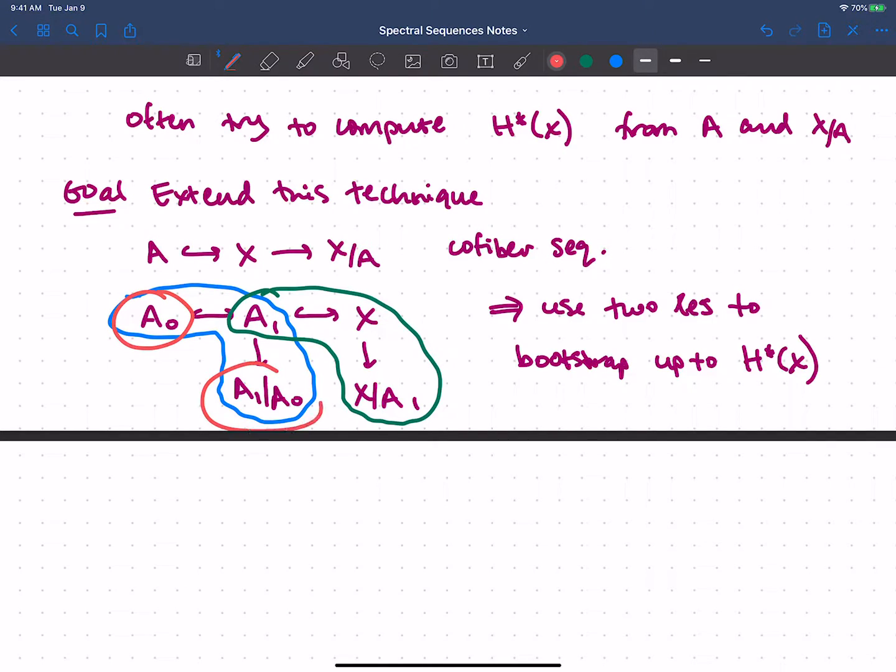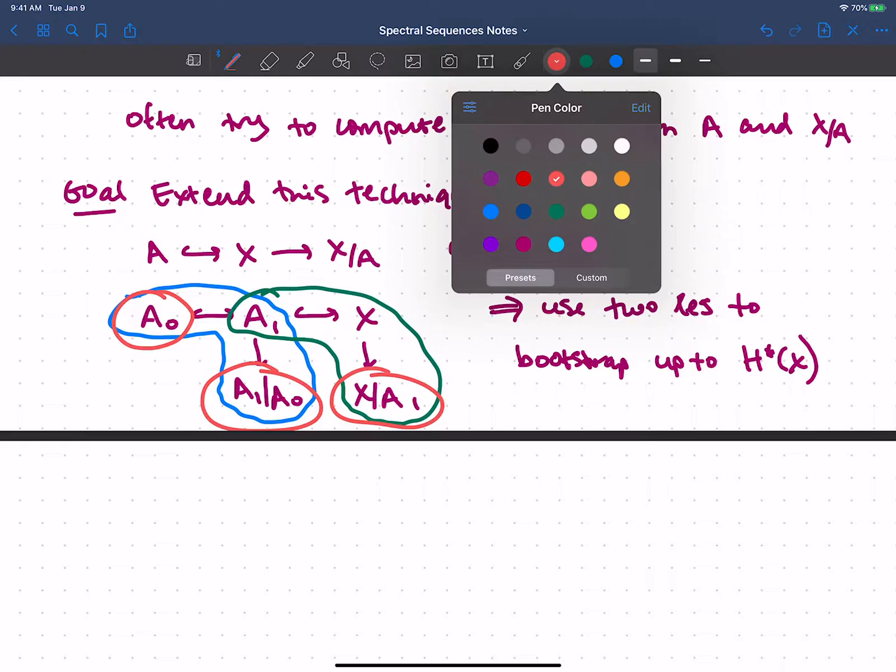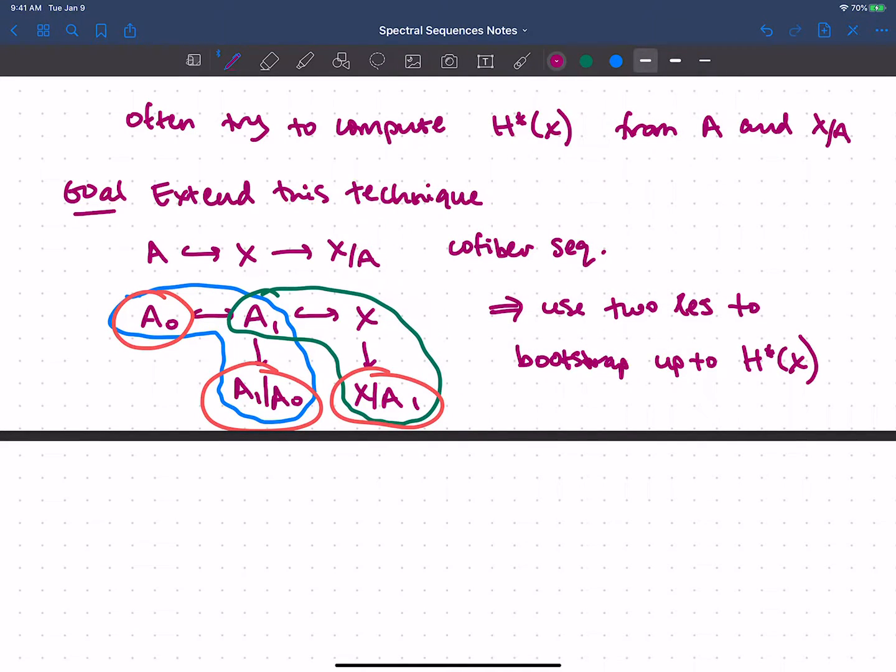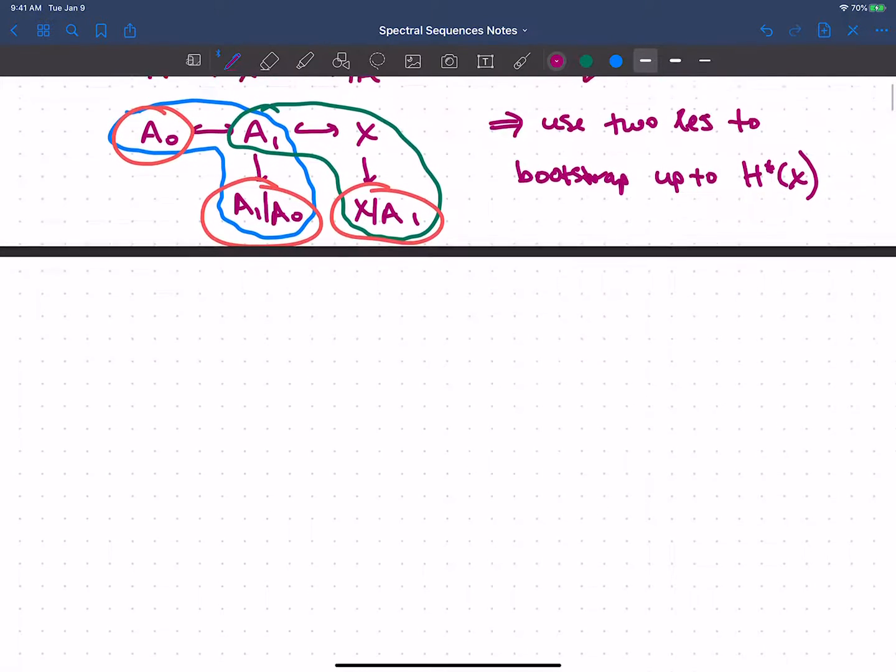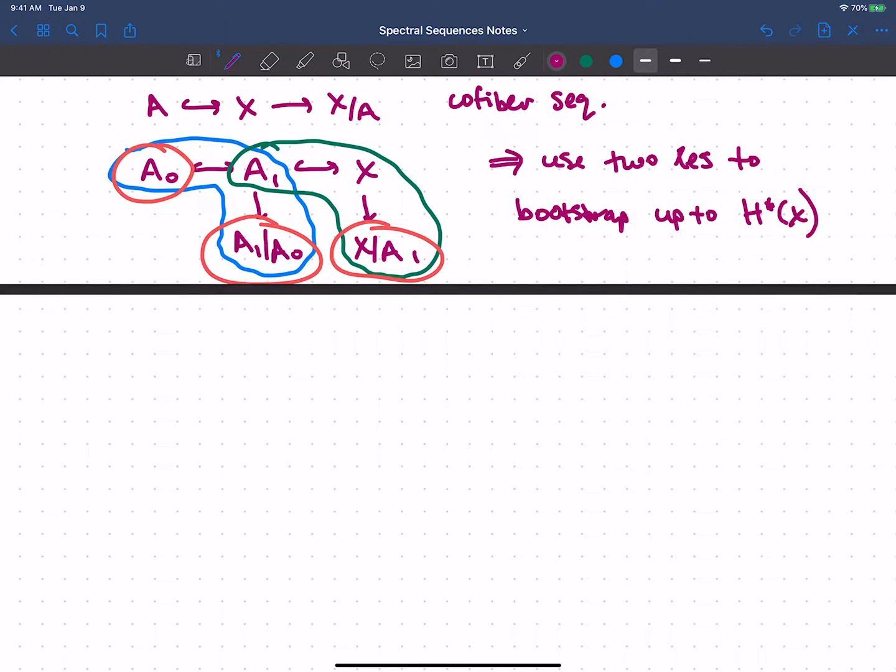all I really needed to do that was to look at each of these filtration quotients. I need to start with A0, A1 mod A0. So that quotient together might help me get to A1. And then that information together with X mod A1 will help me get to the cohomology of X. So we want to extend that idea even further.